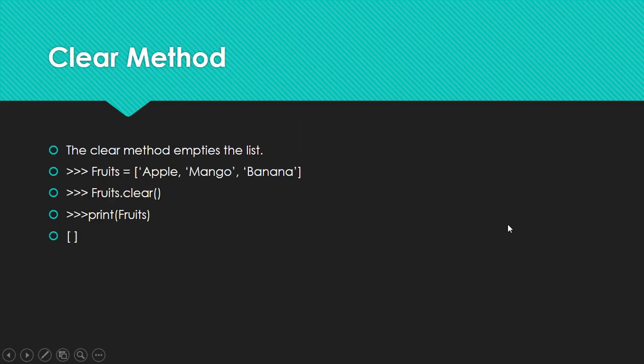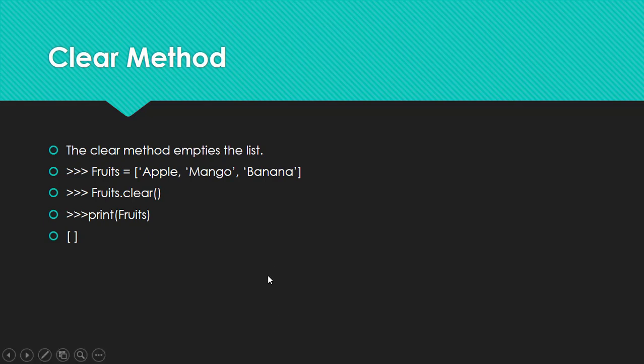The clear method empties the list but does not delete it — understand this difference. When we call fruits.clear() and print fruits, only empty square brackets are printed, meaning the list is empty but still exists. The del keyword deletes the list entirely, nullifying its existence. But the clear method clears the contents while the list named fruits still exists.